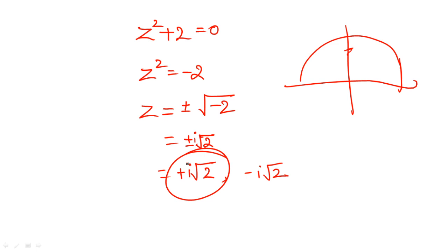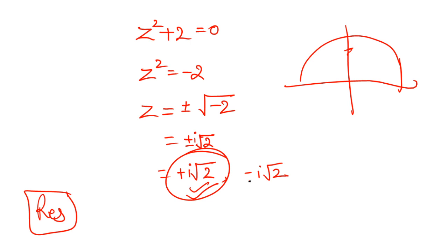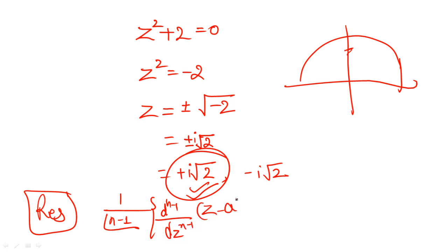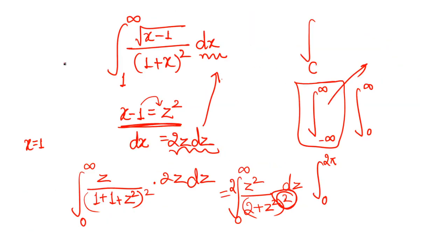We consider the pole at plus iota·root 2 and find the residue. Checking its order: it is order 2, so we use the formula for a residue of an order-n pole: (1 / (n−1)!) · d^(n−1)/dz^(n−1) [(z − a)^n · f(z)] evaluated at z equals a. Taking all these steps gives the final answer using the integration formula: 2πi times the sum of residues. The initial steps — changing limits and setting up the expression — were the most important part.